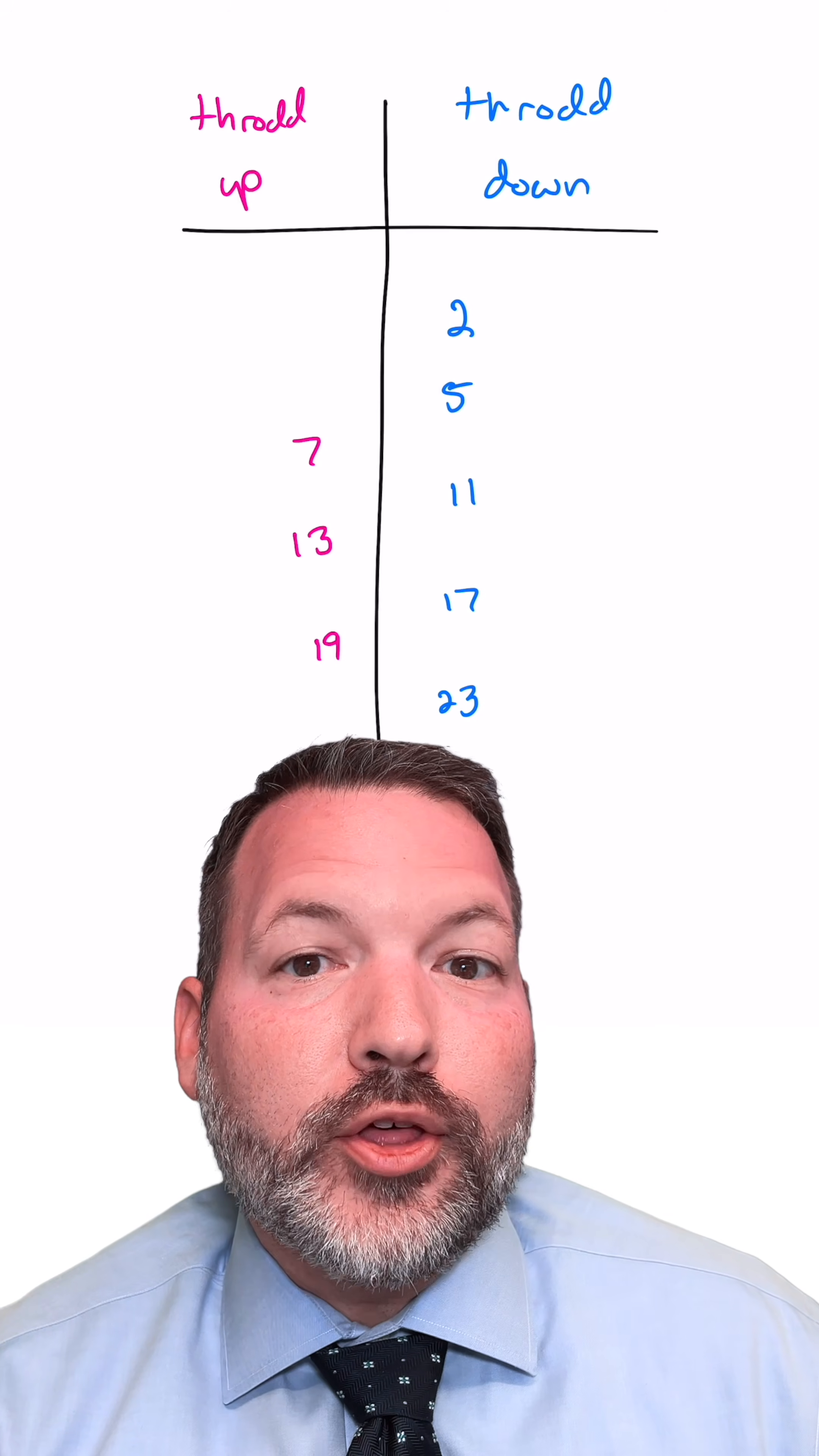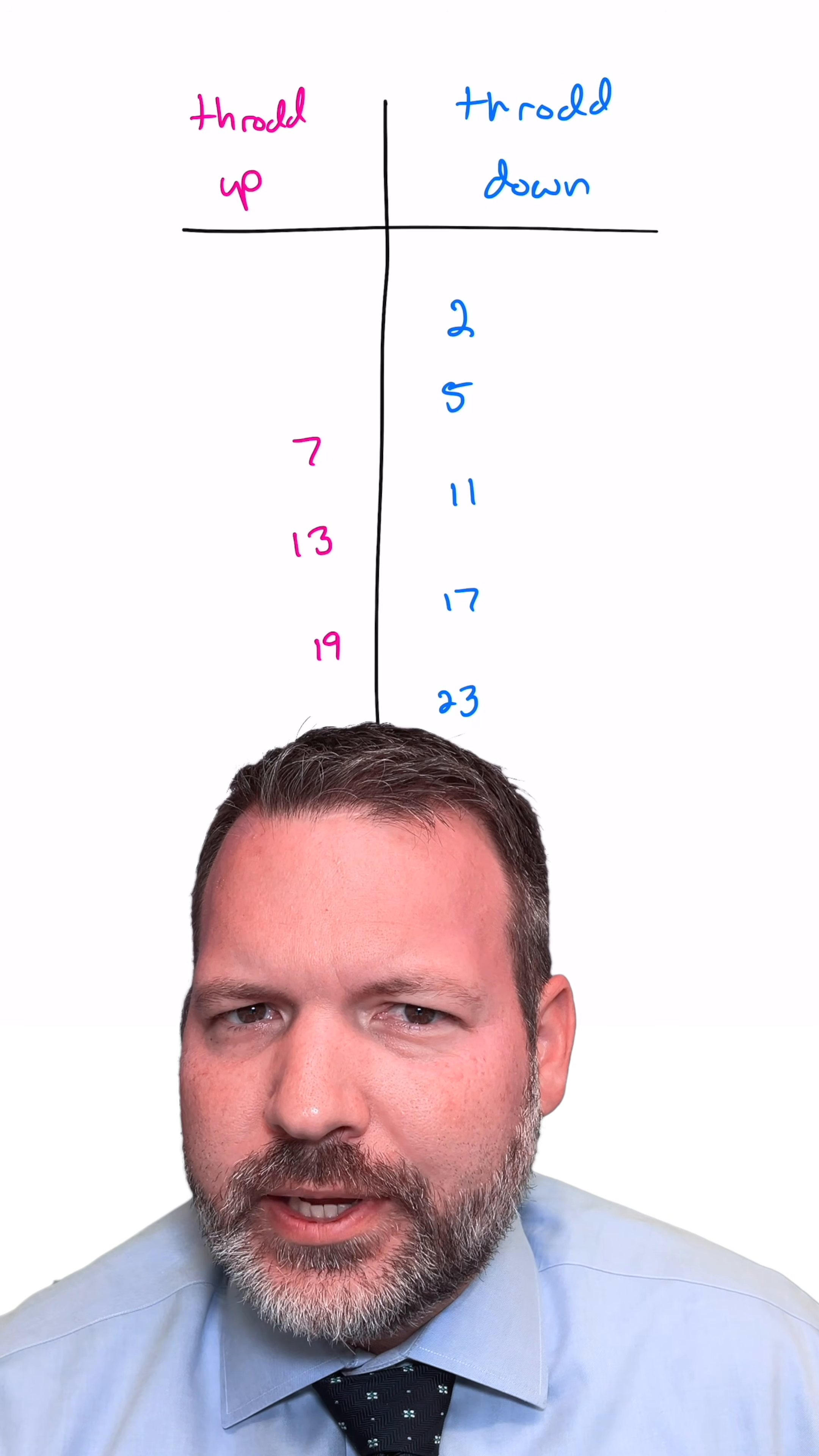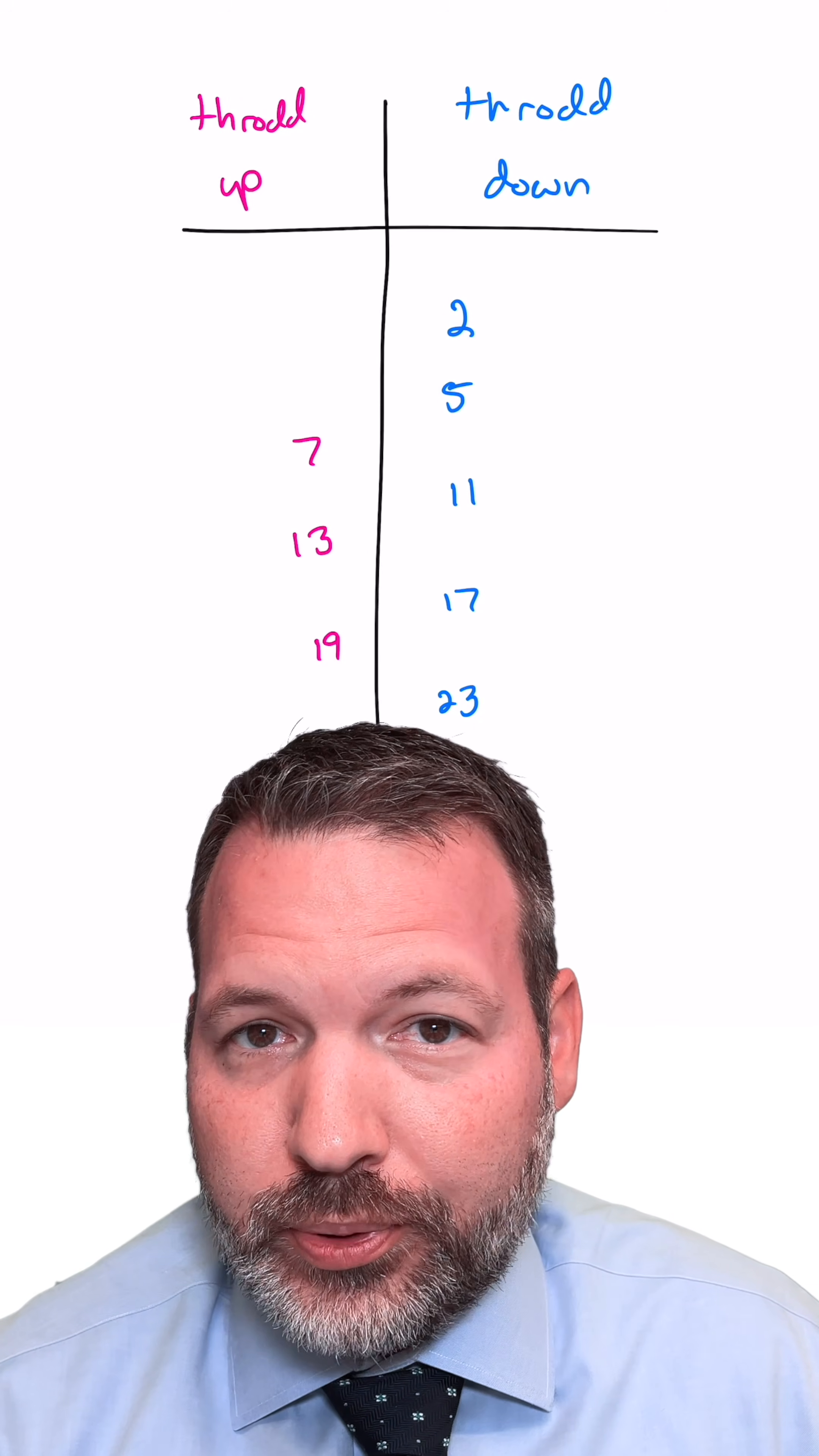Of course all the primes live among the throd up and throd down numbers, but if you start to keep track of which primes are throd up versus which ones are throd down, something weird starts to happen. Number theory would suggest to us that there should be no particular bias. There should be in some sense just as many throd up prime numbers as there are throd down prime numbers.